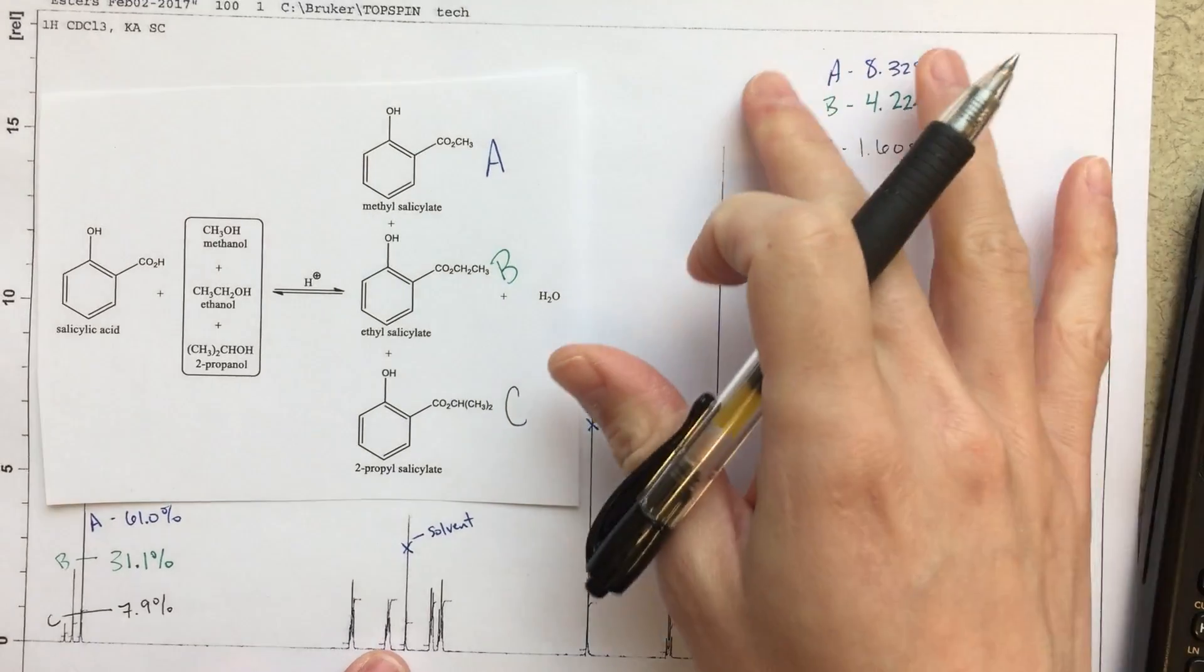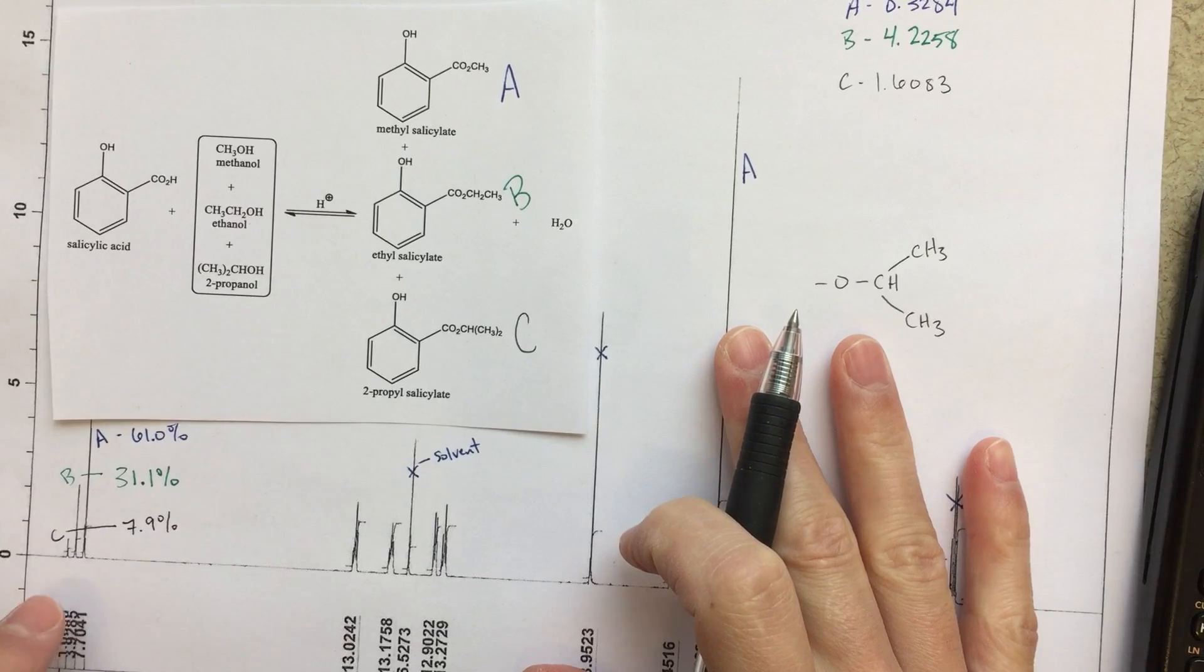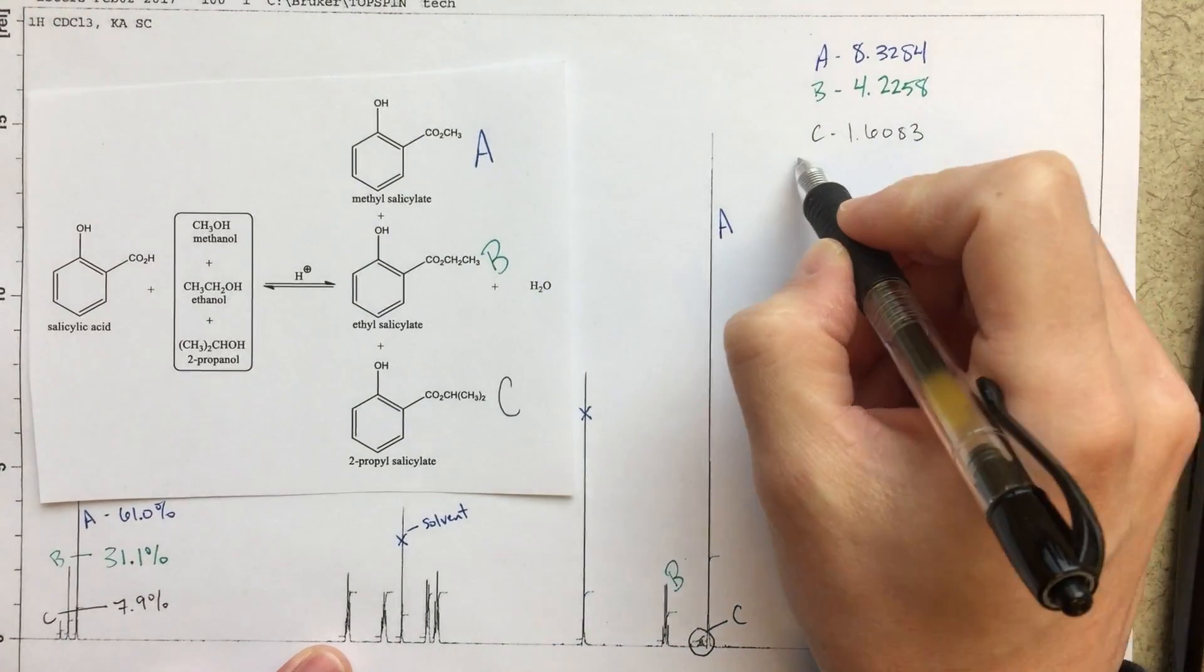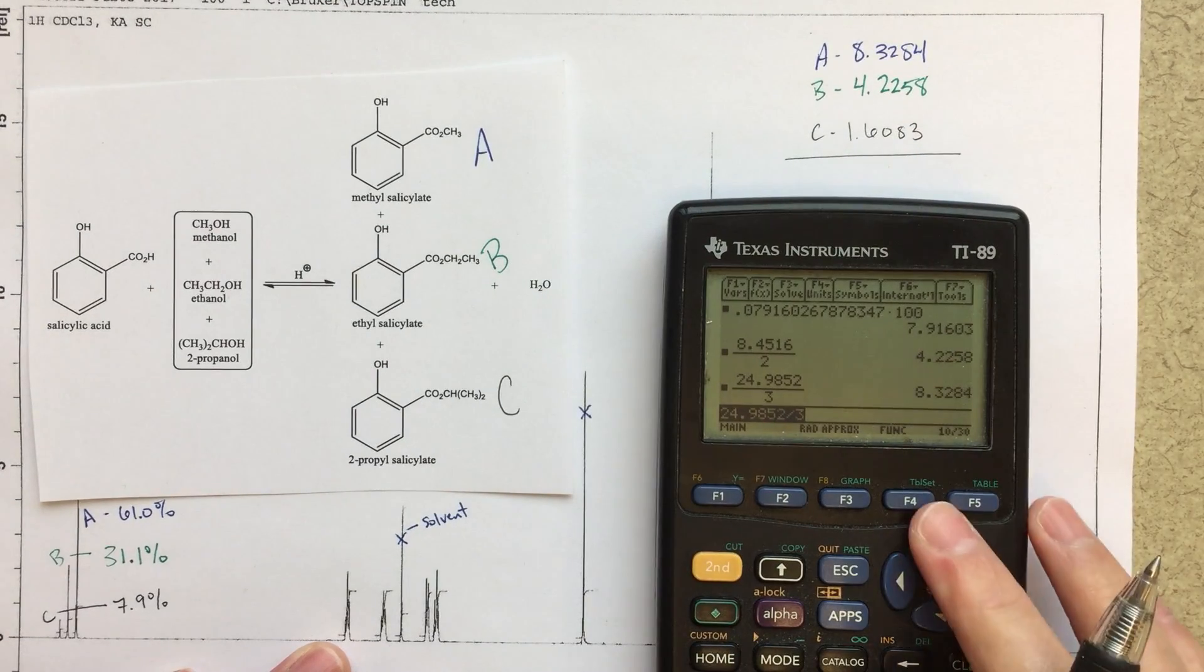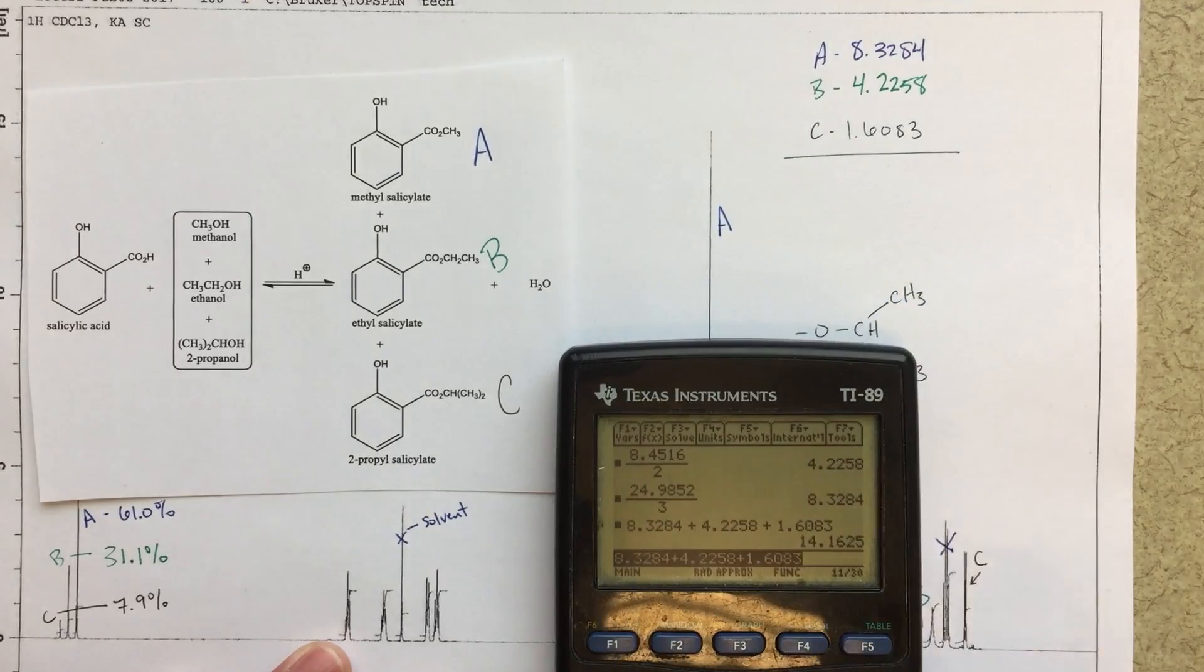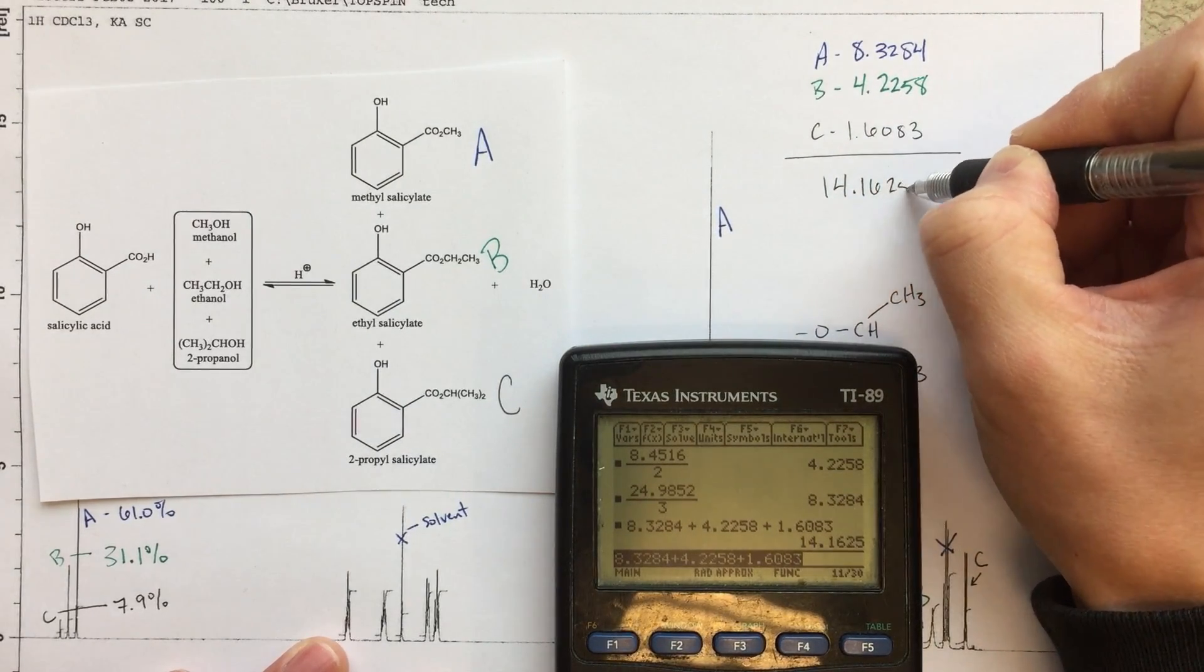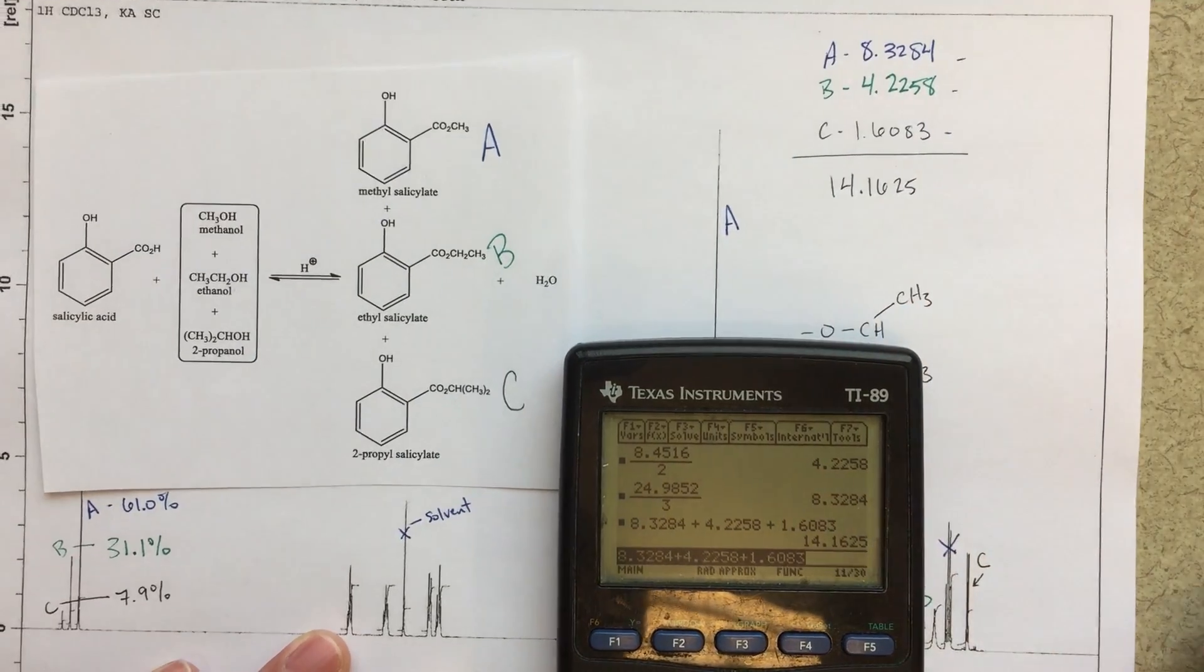So now that I've standardized all of my integrals to 1, essentially, I'll do the same treatment that I did over here to find the new percentages for this. So let's go ahead and total those. So we've got that number plus that number plus 1.6083. So my total here is 14.1625. And then I'll find the percentages, the relative percentages for all of these, just like I did before.